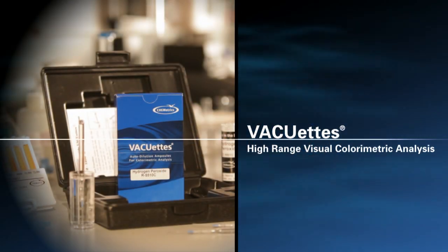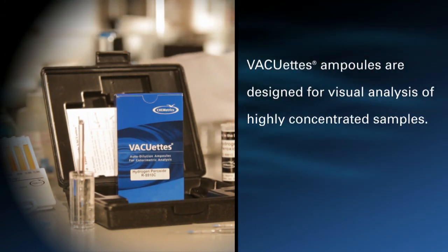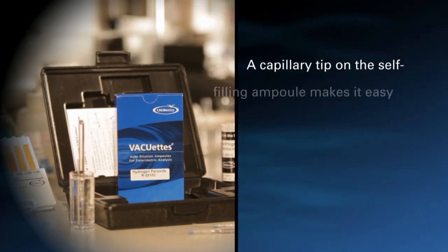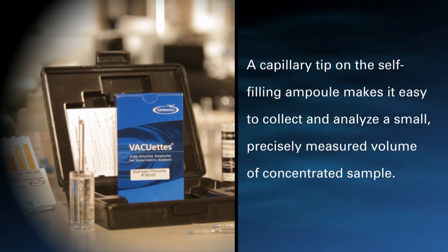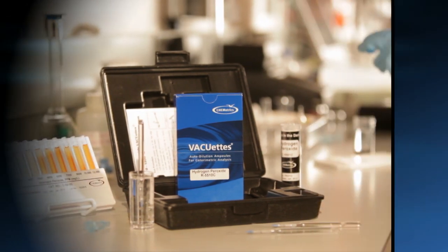VACUETS Auto-Dilution Method for Visual Colorimetric Analysis. VACUETS Ampules are designed for visual analysis of highly concentrated samples. A capillary tip on the self-filling ampule makes it easy to collect and analyze a small, precisely measured volume of concentrated sample.